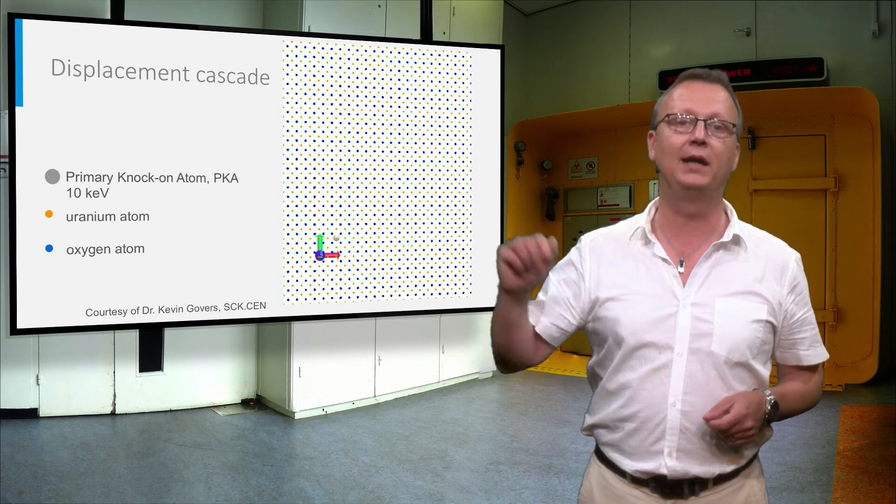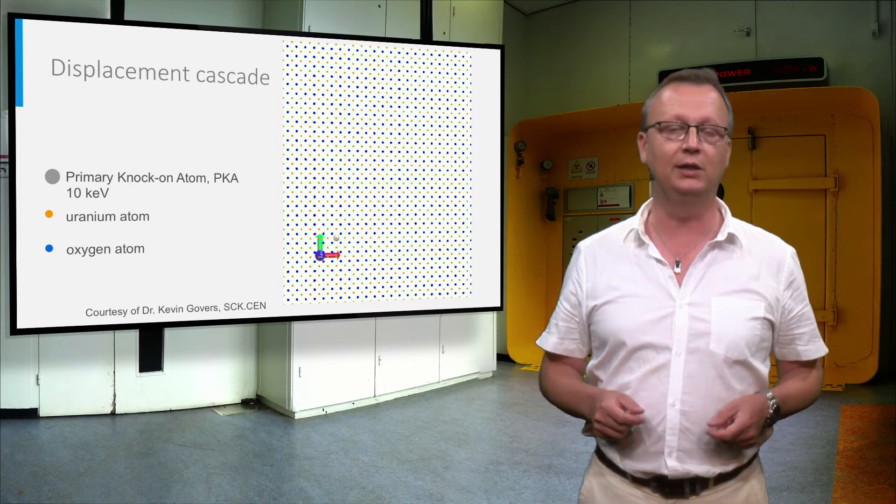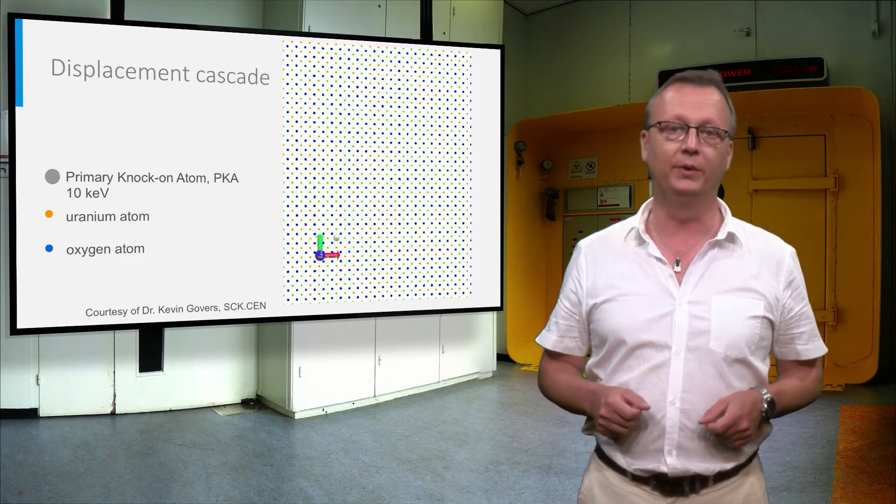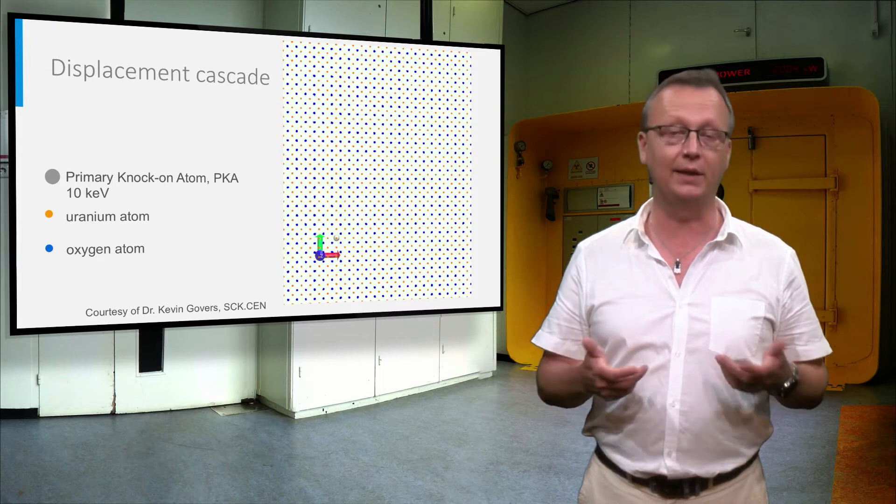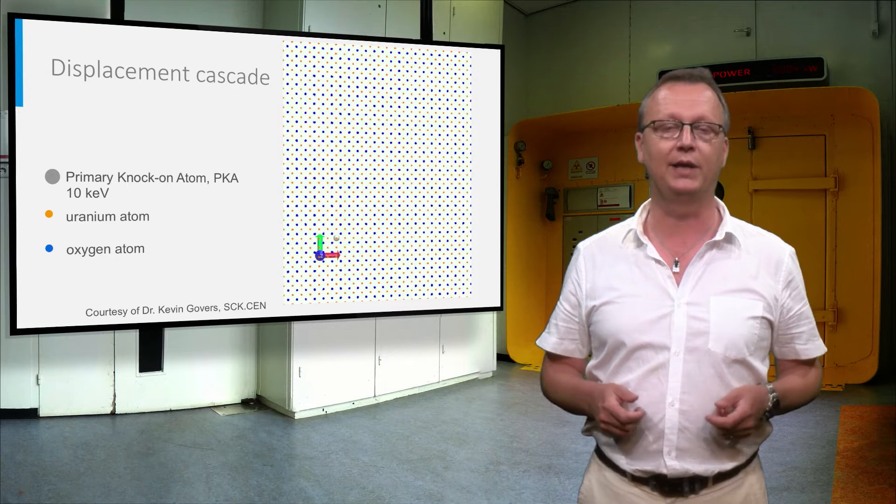In this molecular dynamic simulation, the recoil atom is the larger represented gray sphere and displaces the uranium in orange and oxygen in blue from their regular lattice positions. While most of the defects are quasi-instantaneously healed, some lattice defects are left at the end of the cascade.